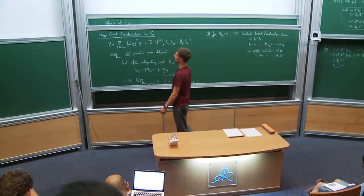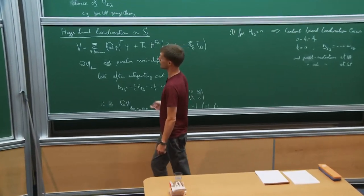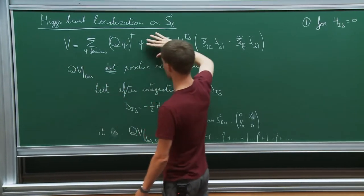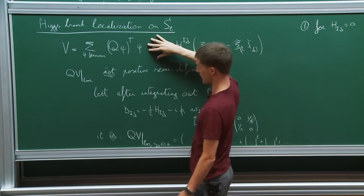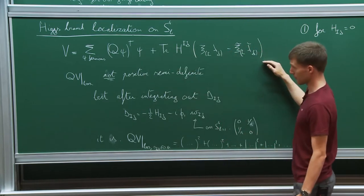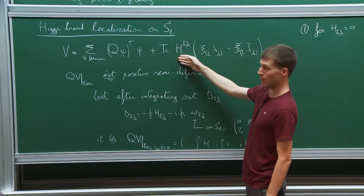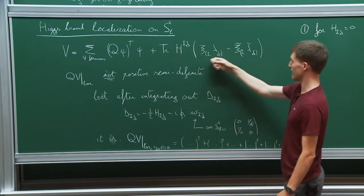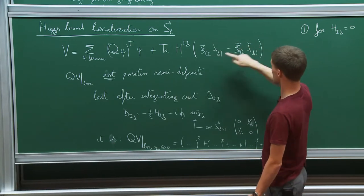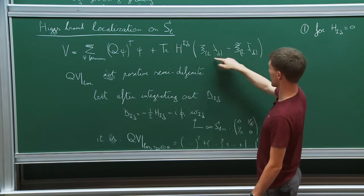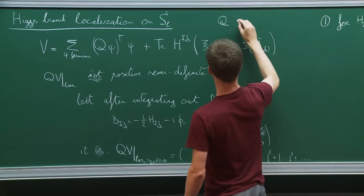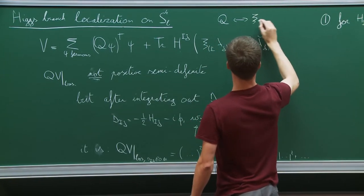Yesterday we started talking about Higgs branch localization. Instead of the standard localizing functional — the sum over fermions seen in essentially all lectures — I added an extra term where H_ij was some arbitrary functional of the bosonic fields, contracted with the Killing spinors which describe Q. Q is described by a pair of Killing spinors.